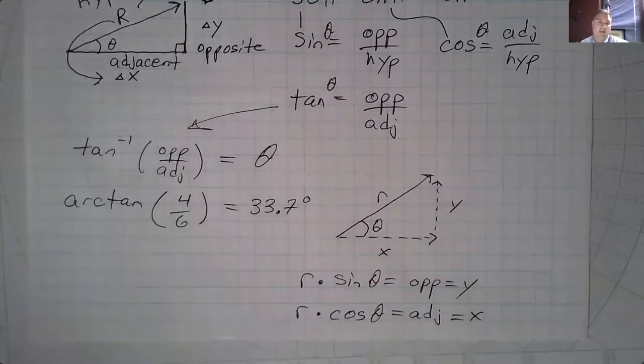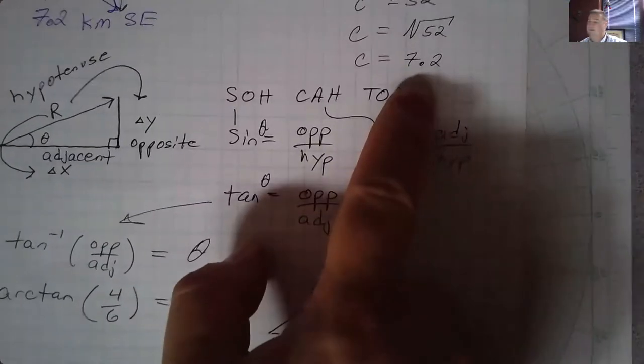And so if you run through this now just for practice, and you take the cosine of 33.7, I get about 0.832 and if I multiply that by what we said earlier, 7.2 for the actual length away,